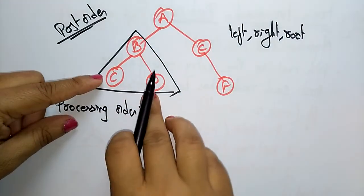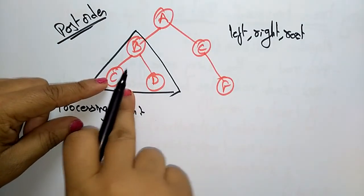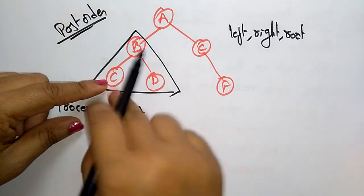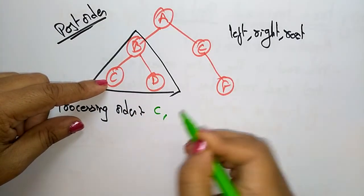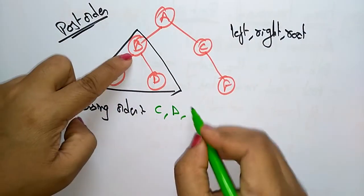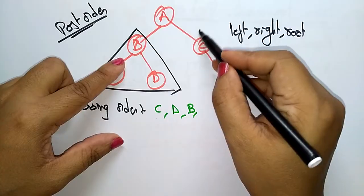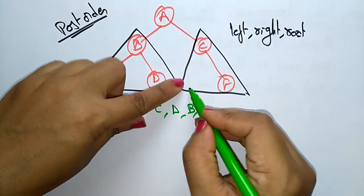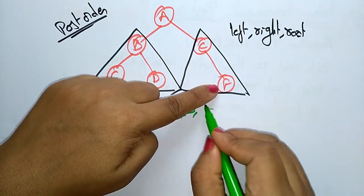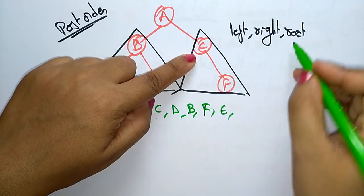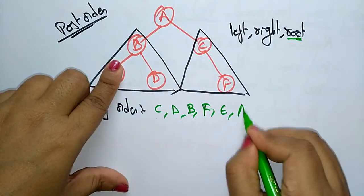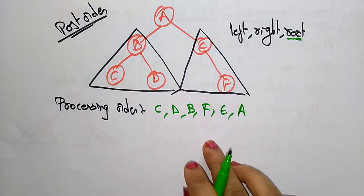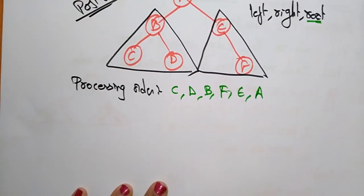According to the algorithm, after visiting the left subtree you apply post-order: first visit the left node, then the right node, then the root node. Then come to the right subtree. In the right subtree, first visit the left — there is no left — so come to the right, then visit the right subtree and root node. So the sequence of post-order is: C, D, B, F, E, A.